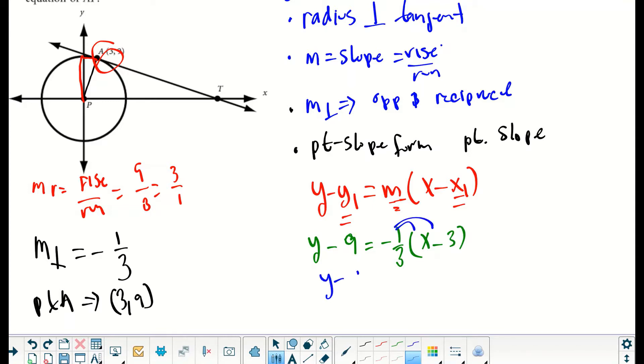Distributing to everything inside the parentheses: y minus 9 equals negative one-third x plus 1. Last thing to do is add 9 to each side so we can solve for y. Our final answer is y equals negative one-third x plus 10.